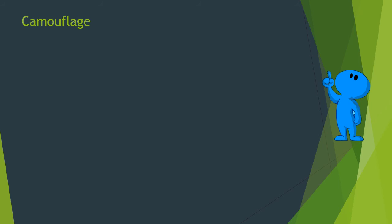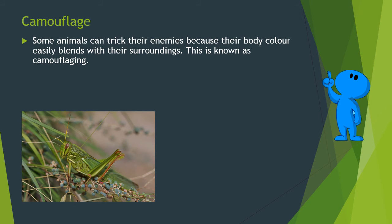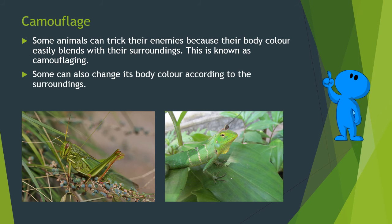Some animals can trick their enemies because their body color easily blends with their surroundings. This is known as camouflaging. Some can also change their body color according to their surroundings. For example: grasshopper, stick insect, and chameleon.